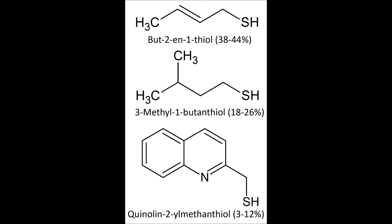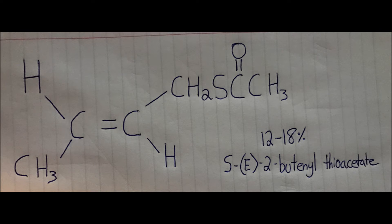Skunks only contain low molecular weight thiols. Thiols are created when a sulfur takes the place of an oxygen in the hydroxyl group of an alcohol. Thiols are not very soluble in water, which is why washing clothes or dogs with water does not help — it can even make it worse. The reason water makes the smell worse is because of thioacetates.